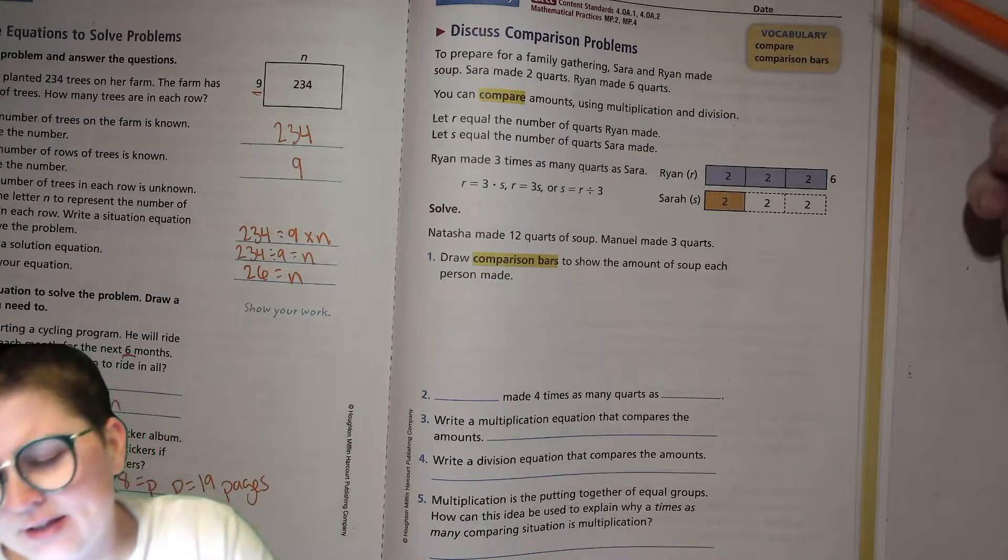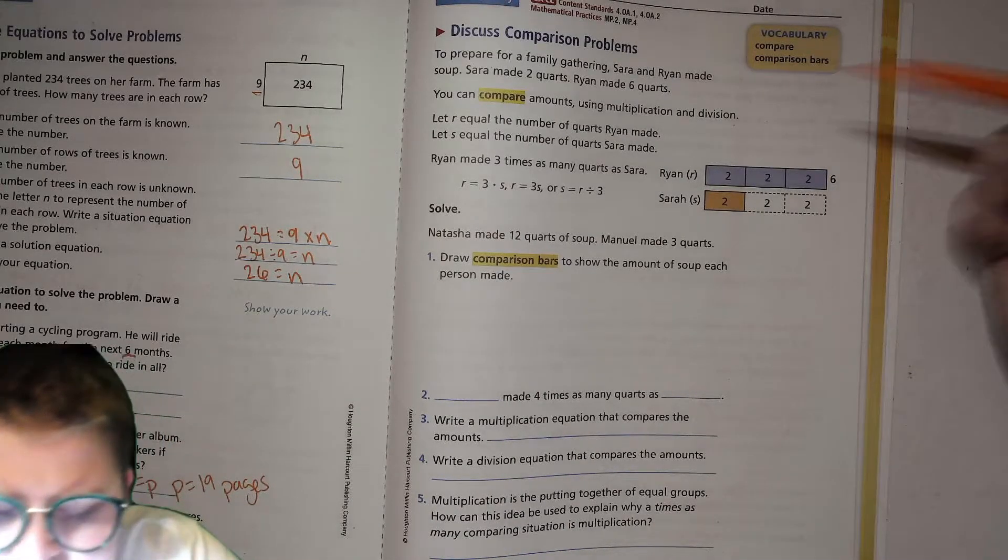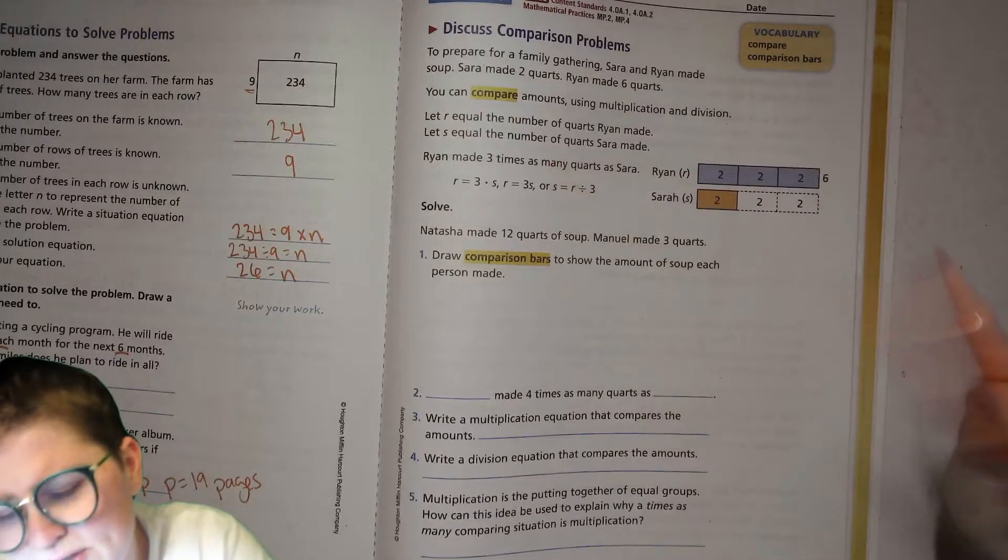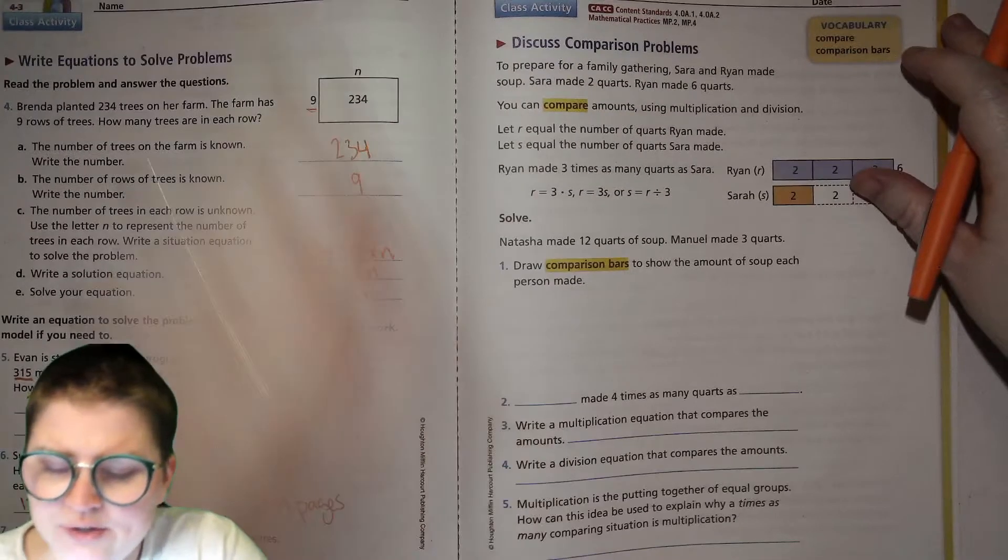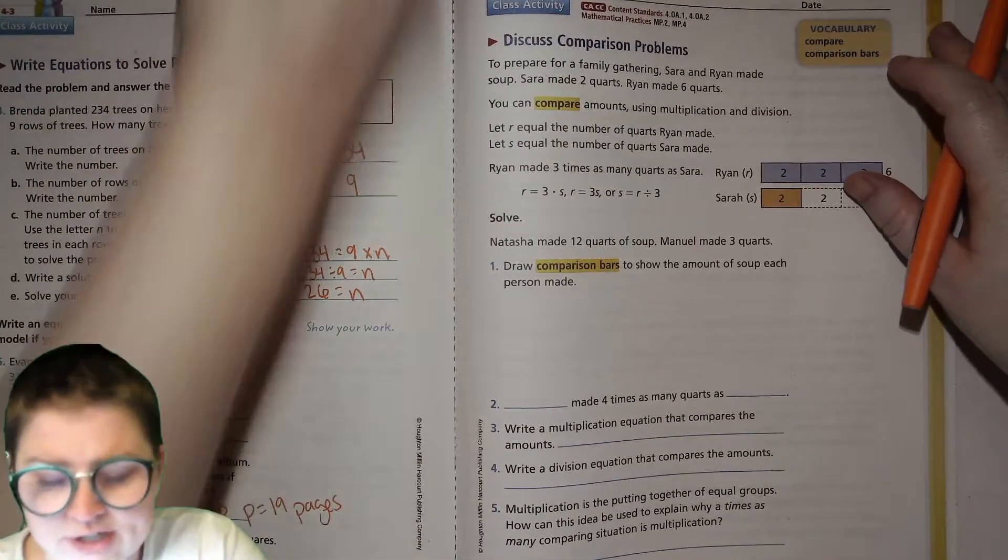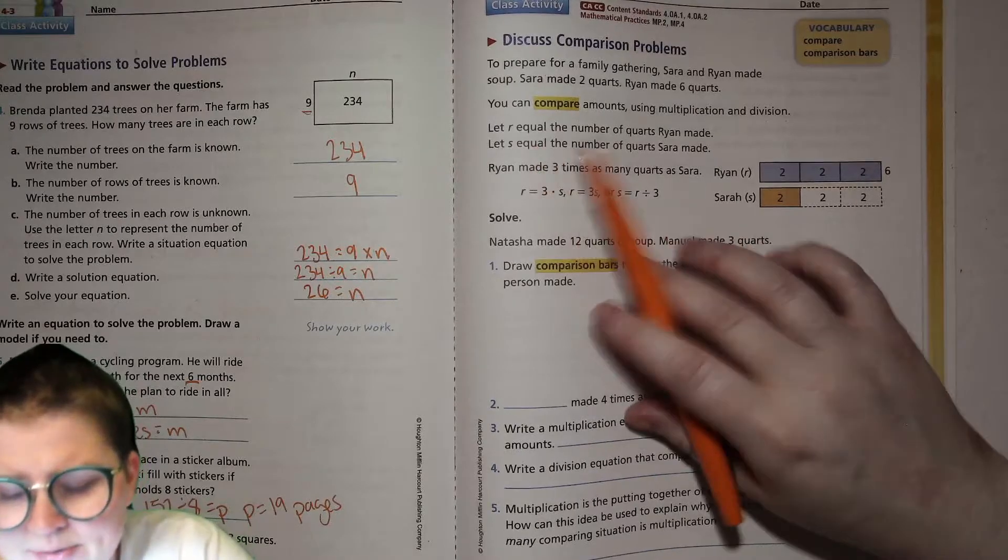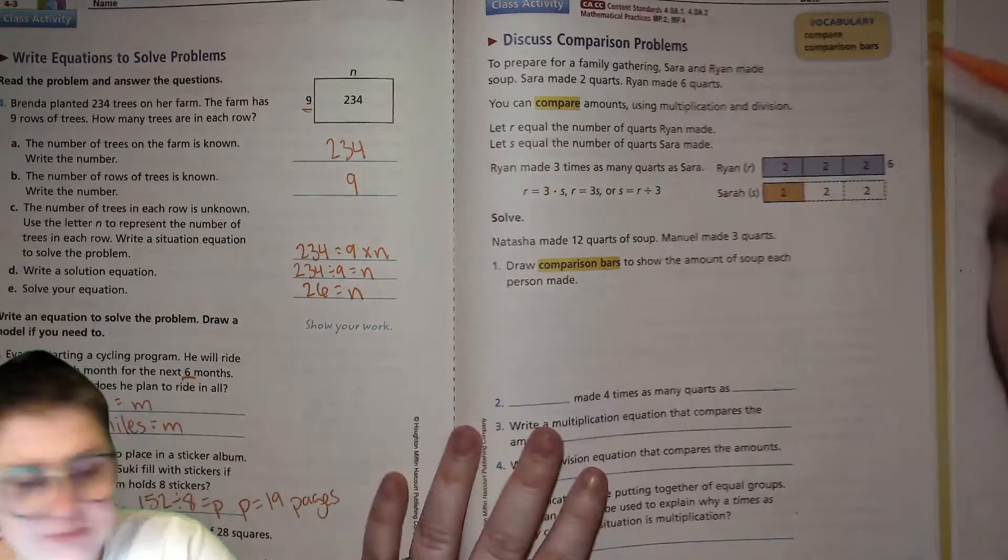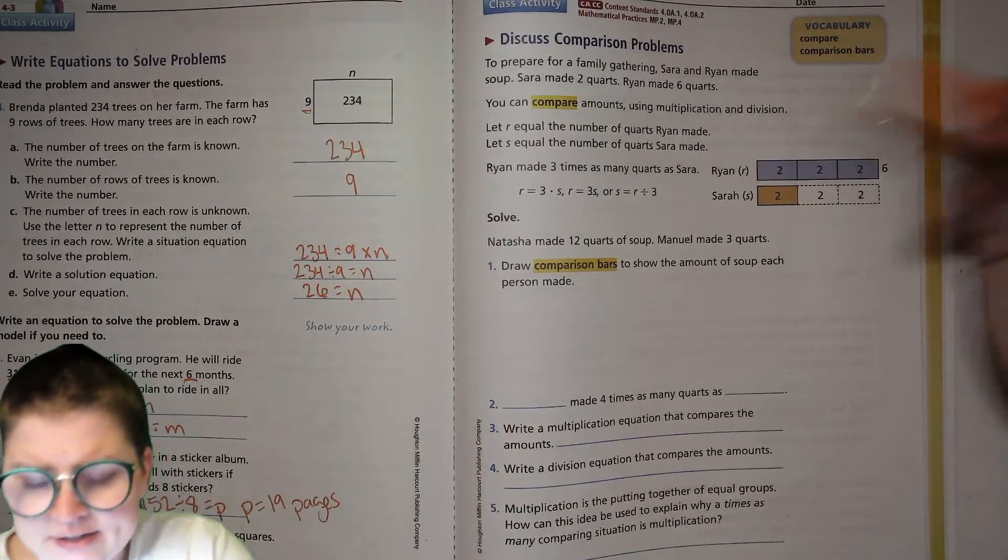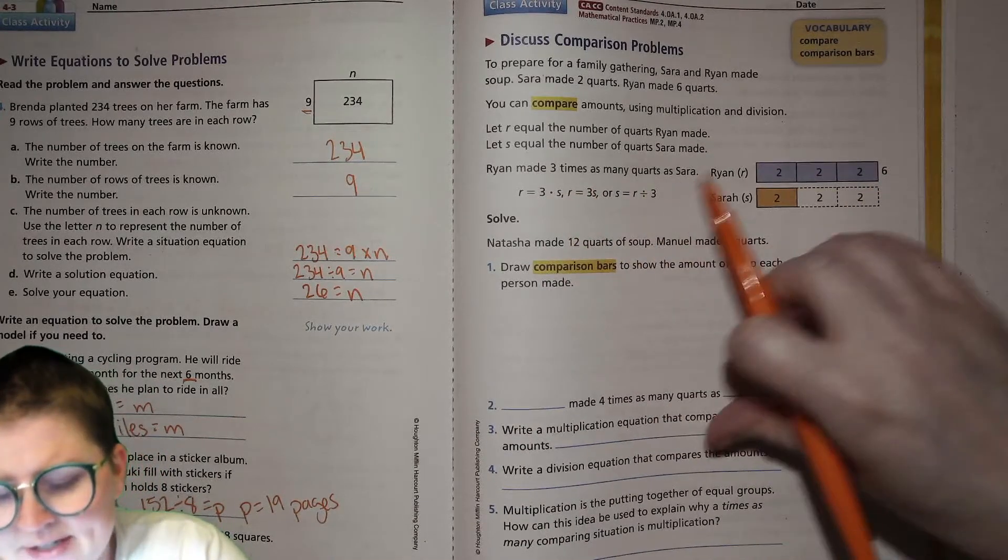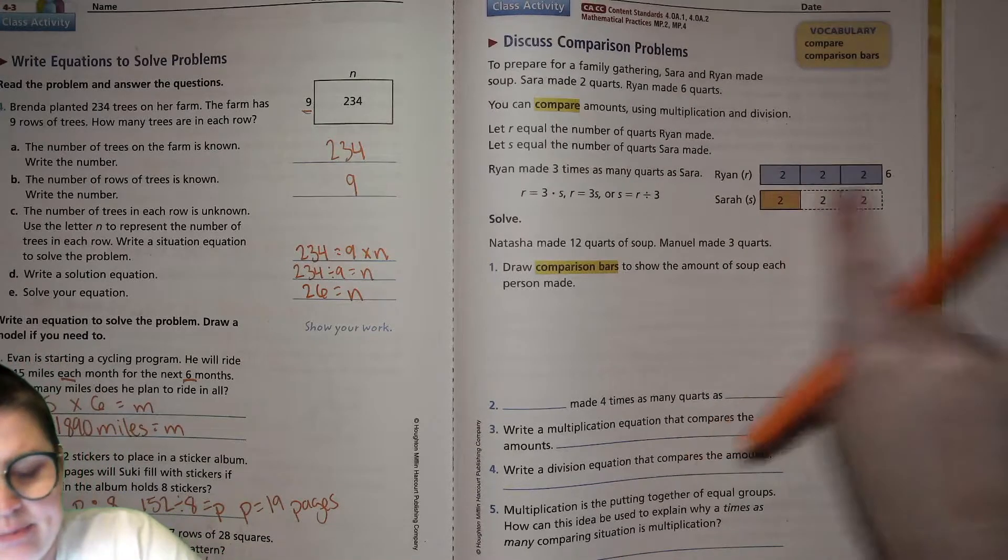To prepare for a family gathering, Sarah and Ryan made soup. Sarah made two quarts. Ryan made six quarts. How nice of them. You can compare amounts using multiplication and division. Let R equal the number of quarts Ryan made. So R for Ryan. And let S equal the number of quarts Sarah made. So S for Sarah. Ryan made three times as many quarts as Sarah. So we have our bar.